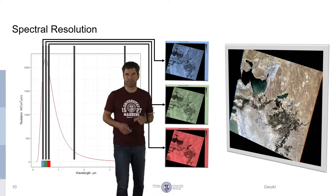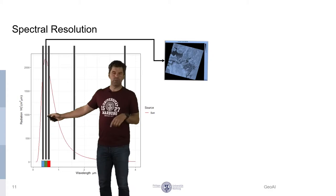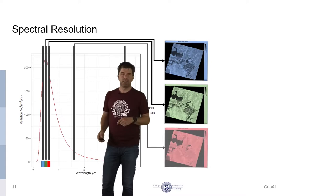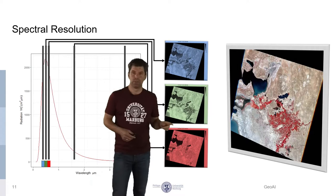Of course, we can arrange that differently. For example, we could use this channel here which is sensitive for green radiation and color it in blue. We use the red channel and color it in green, and we use a channel in the near-infrared somewhere between the red light and that near-infrared part here and color it in red. And when we overlay that, then we get such a false color composite.